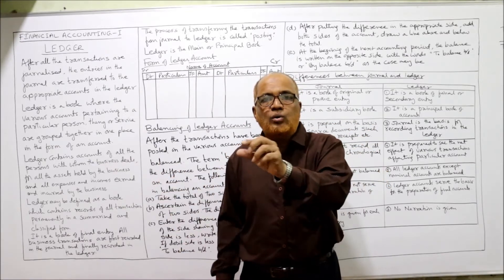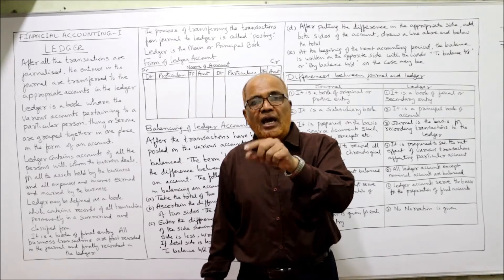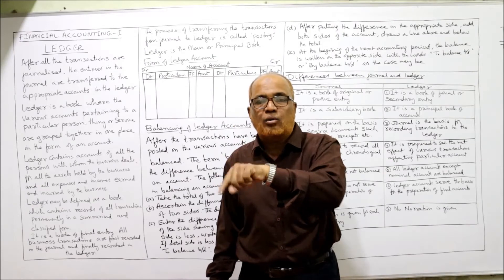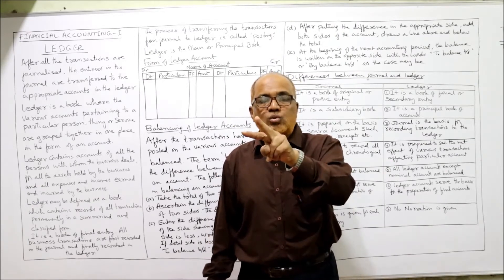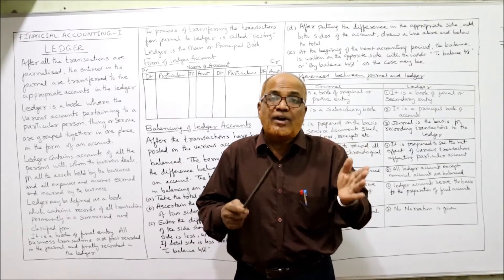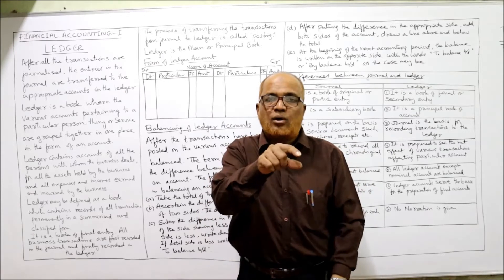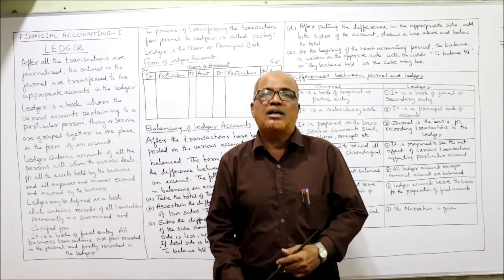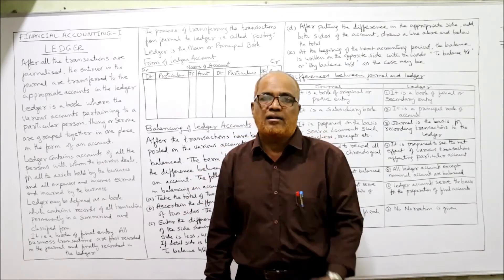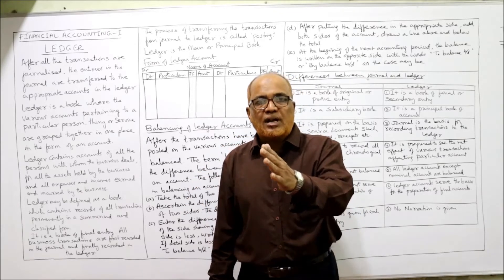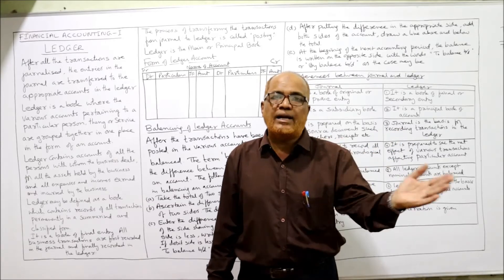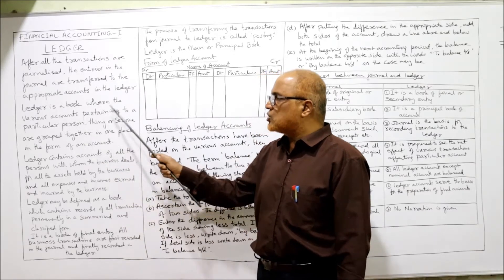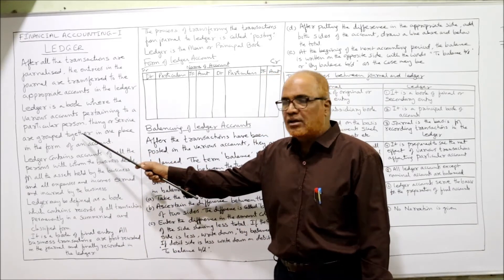The ledger contains accounts — all the accounts are opened in the ledger. After passing a journal entry, we identify the two accounts involved: one is debited and the other is credited. These two accounts are then located in the ledger and the entry is taken on the debit or credit side as per the journal entry. This transferring of entries from journal to ledger is called posting.